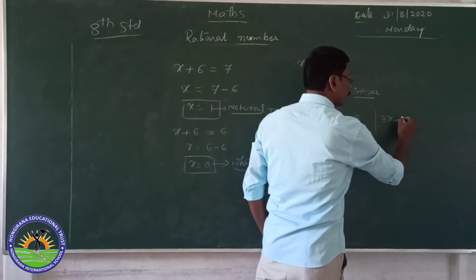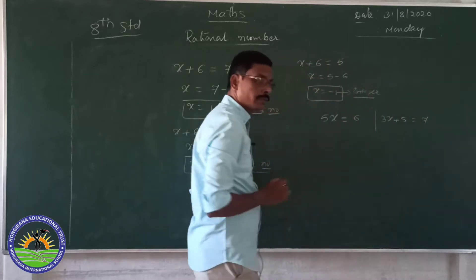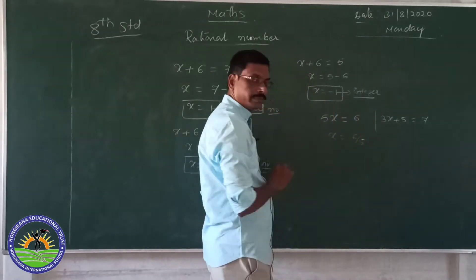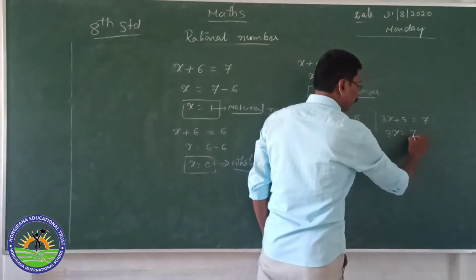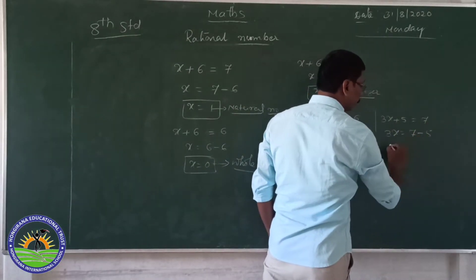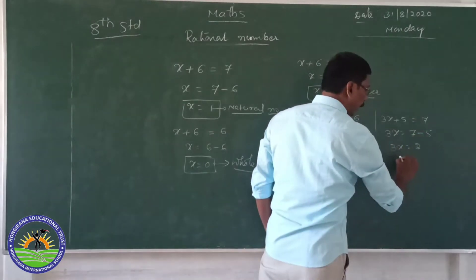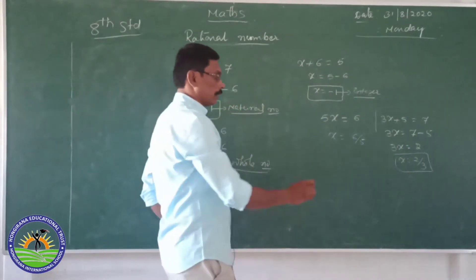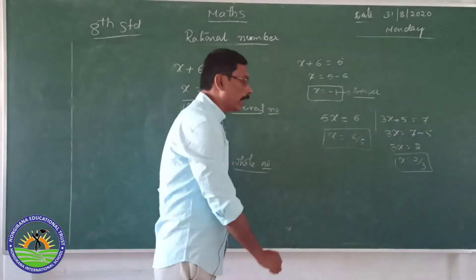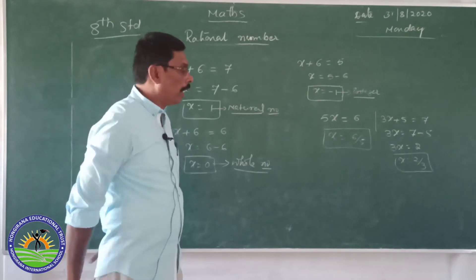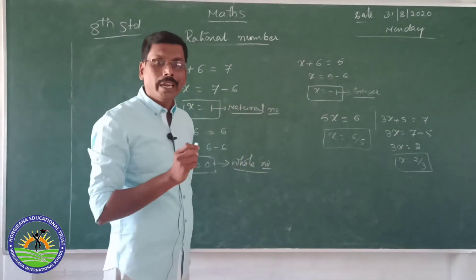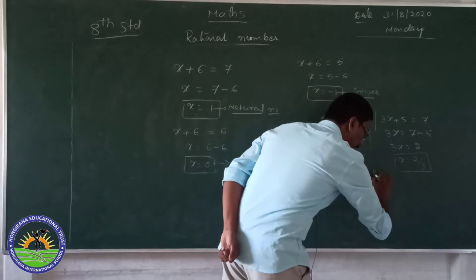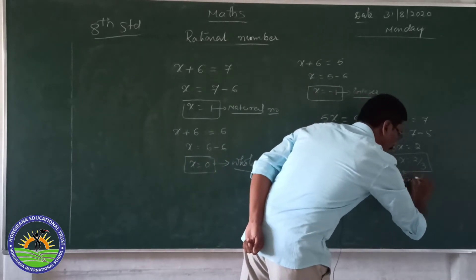Let us solve. For 5x is equal to 6, x is equal to 6 by 5. For 3x plus 5 is equal to 7: moving 5 to the RHS, 3x is equal to 2, so x is equal to 2 by 3. Observe the solutions: x is equal to 6 by 5 and x is equal to 2 by 3. These solutions lead us to the rational number.